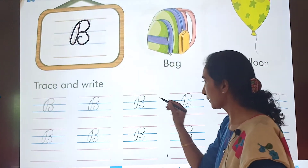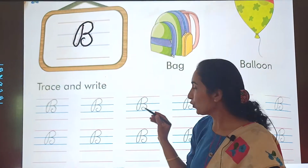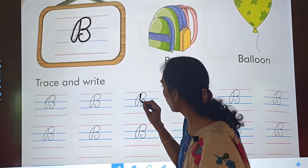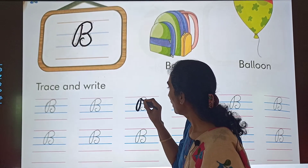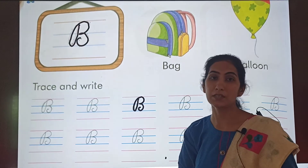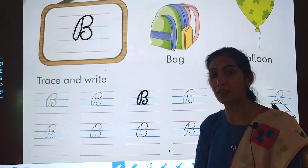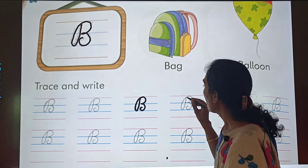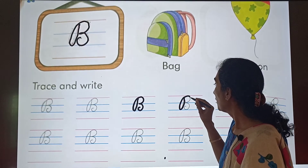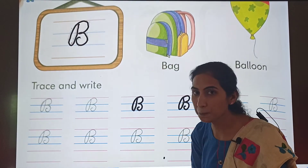Let us try again. Where do we start from? We start from this point. Go down, have a curve, go up, half curve, another half curve. This is letter B. Shall we try it again? Start from this point, go down, curve, and another curve. This is letter B.